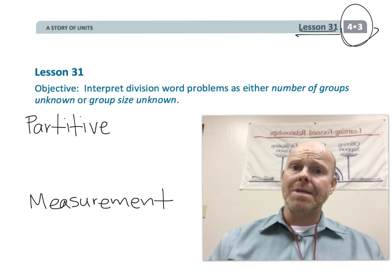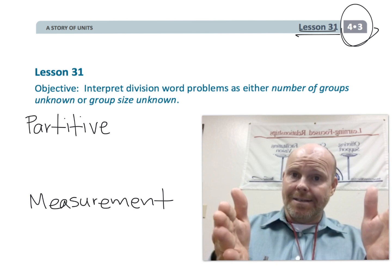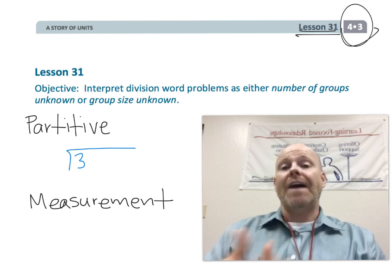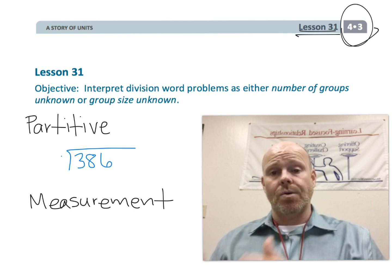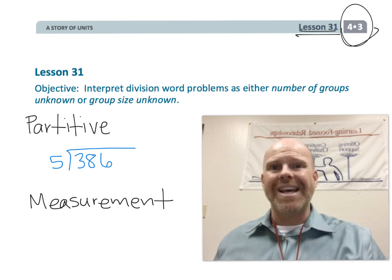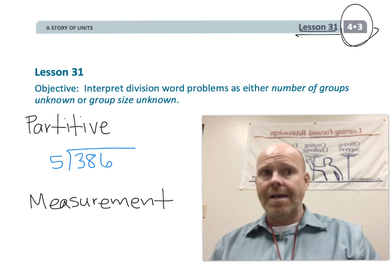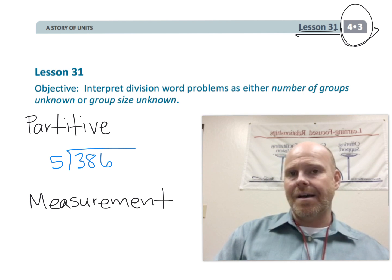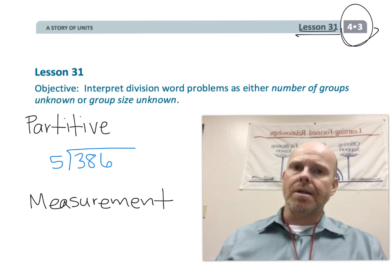Partitive means you've got a certain number that's your dividend and you're going to cut it into five parts — divide by five — so you know how many groups you have, but it's the size of the groups that you're not sure of. That's partitive.